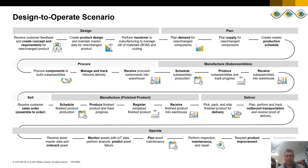We have a diagram we affectionately call our design-to-operate snake, obviously because of its snake look and feel. Essentially, we have multiple capabilities across the full end-to-end scope — from designing a product, to planning that product, to procuring, to manufacturing it, to delivering it, and finally operating, which covers asset maintenance when the item is at the customer. It also covers asset maintenance for items you may have purchased as an organization, as opposed to ones you may have created yourself.